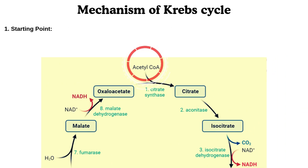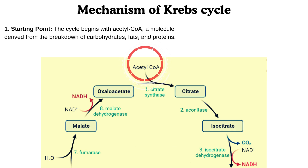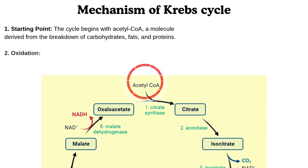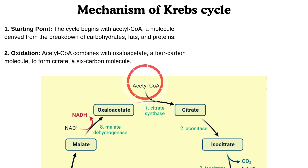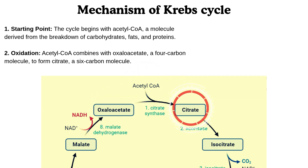Step 1 is the starting point. The cycle begins with acetyl-CoA, a molecule derived from the breakdown of carbohydrates, fats, and proteins. The next step is oxidation. Acetyl-CoA combines with oxaloacetate, a 4-carbon molecule, to form citrate, a 6-carbon molecule.